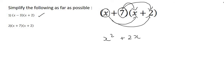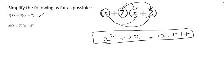So 7 times x is 7x, and 7 times 2 is 14. Then what we do is we scan these four terms once again, and we put any like terms together, where here we have a 2x and a 7x, so 2x plus 7x is 9x plus 14.